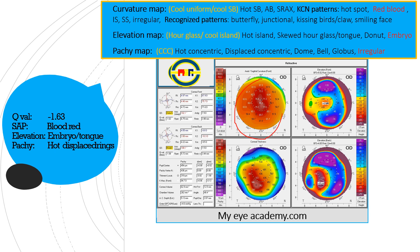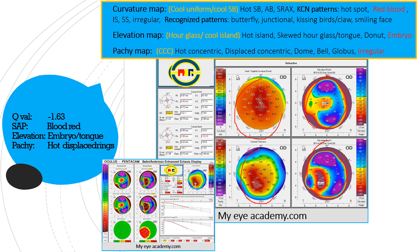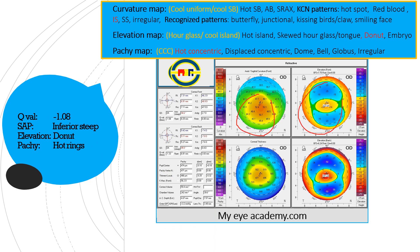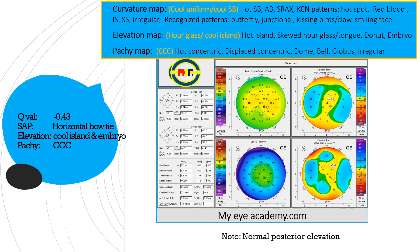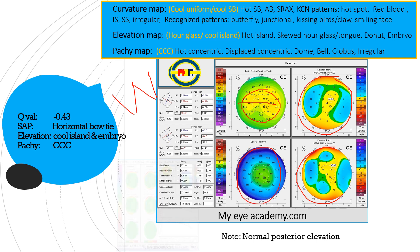Then a red blood appearance on the curvature map, embryo-shaped on elevation maps, and irregular hot rings — again an abnormal cornea. Next, this patient shows an inferior steep, donut-shaped appearances on elevation maps, and hot rings on pachymetry — again abnormal, confirmed by the indices. In this topography map there is a cool bow tie, but it is horizontal. Remember, a vertical bow tie represents with-the-rule astigmatism and is better than a horizontal bow tie. A horizontal bow tie may be suggestive of an abnormal cornea, but not always. The elevation maps show an hourglass anteriorly and cool eye lens posteriorly, with cool central concentric rings — so this is actually a normal cornea.